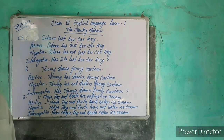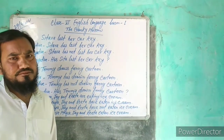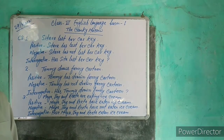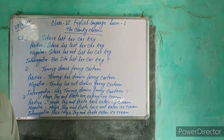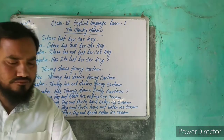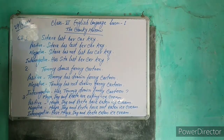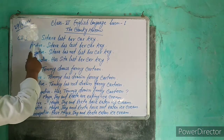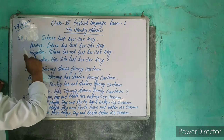We use the third-person singular form with 'has' and 'have.' For the positive sentence, the subject is followed by 'has' or 'have.' This is how we form the present perfect tense positive sentence.